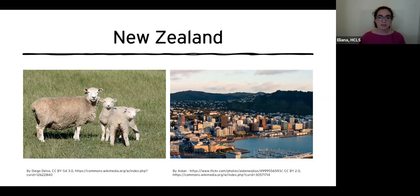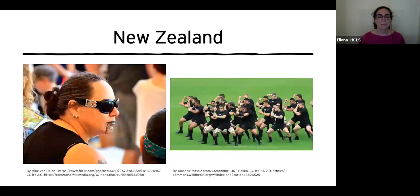Among the people who do live in New Zealand, 74% identify as ethnically European, 15% as Maori, with others identifying as Asian and Pacific peoples. New Zealand has three official languages: English, Maori, and New Zealand Sign Language, with English being the most widely spoken. New Zealand has one of the most secular societies in the world, although Christianity is the most common religion. Students must attend school from ages 6 to 16, with free school offered from age 5 until after they turn 19, and schools in New Zealand are ranked very well internationally.